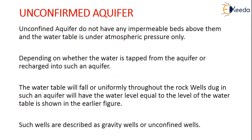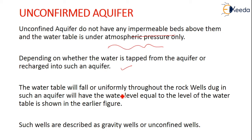An unconfined aquifer does not have any impervious beds above it, and the water table is under atmospheric pressure only. Depending on whether water is tapped from or recharged into such an aquifer, the water table will fall or rise uniformly. Wells dug in such an aquifer will have the water level equal to the water table, and such wells are described as gravity wells or unconfined wells.